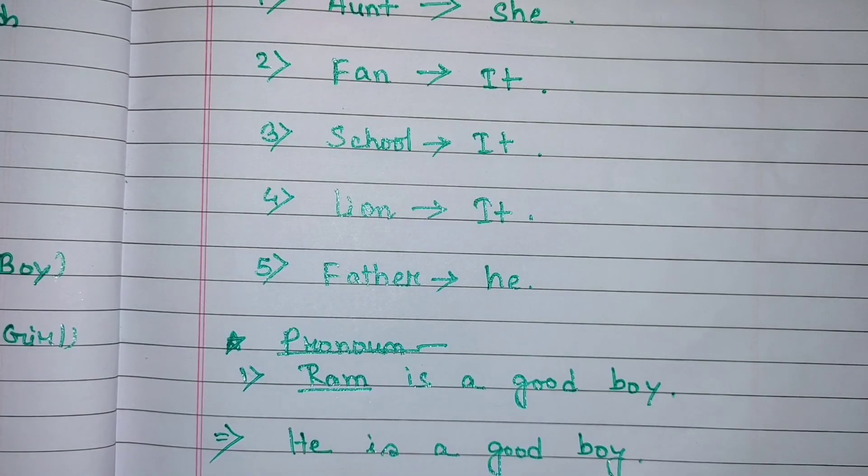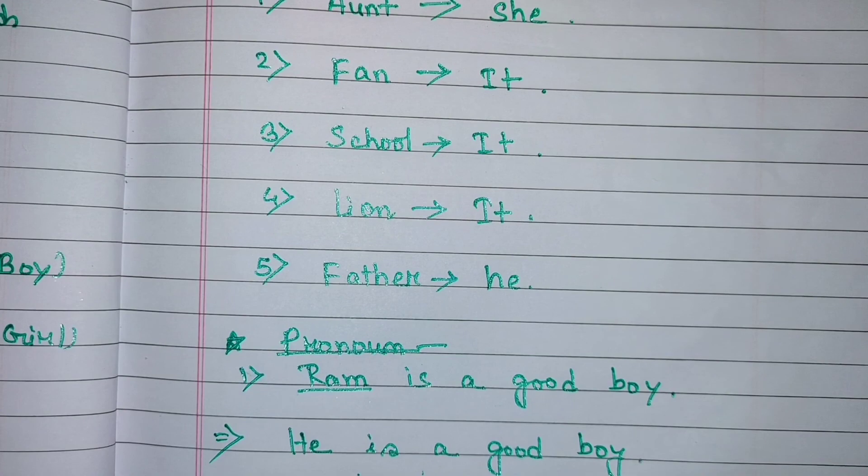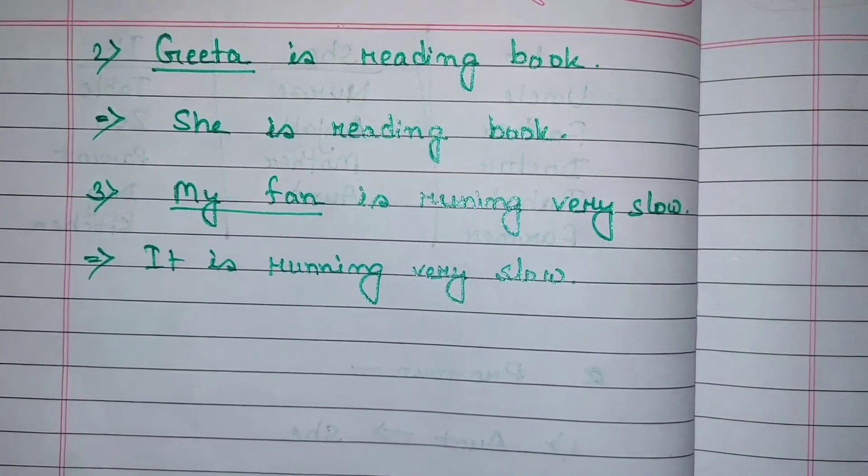Now we will see sentences. Ram is a good boy. Ram is underlined because Ram is a noun. We use pronoun for Ram. Ram is a male figure. So we use he. He is a good boy.